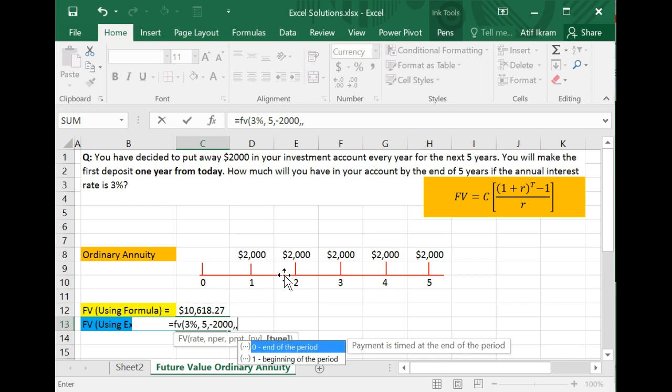Just go past this. And now when you press comma, this is the important part. Excel basically asks you are these deposits being made at the end of the period or at the beginning of the period. And we know that each deposit here is being made at the end of the period. The first deposit was at the end of year one, end of year two, end of year three, so on and so forth.